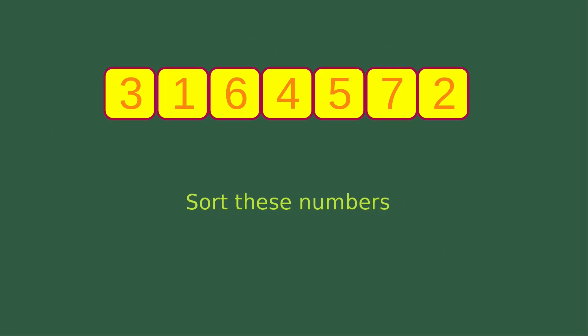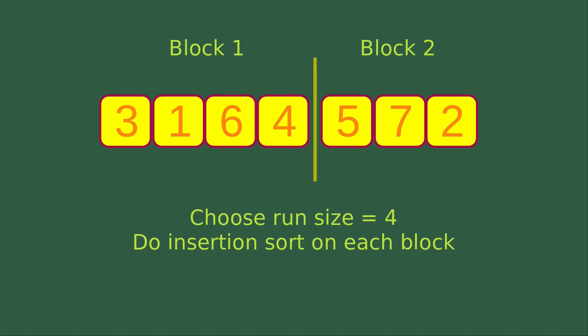For example, we have to sort these seven numbers by using the TimSort process. The first thing to do is determine the block size. When I choose the block size as 4, then I'm able to chop the numbers into two blocks: Block 1 and Block 2. And then I'm going to do the insertion sort on each of these blocks.